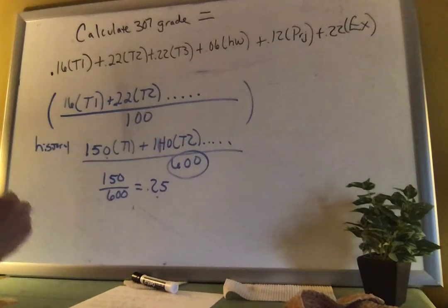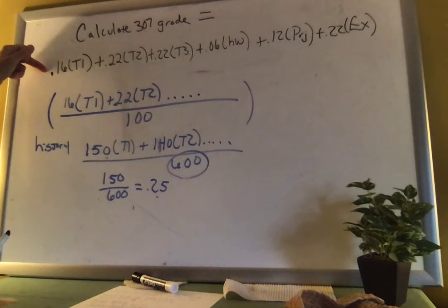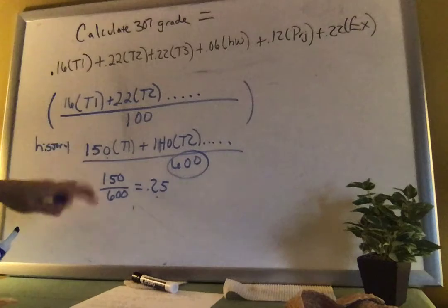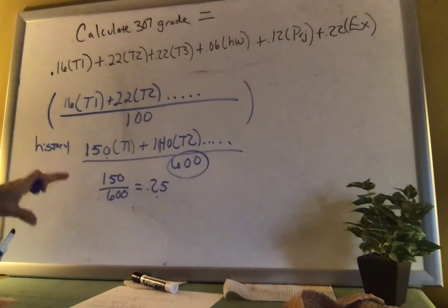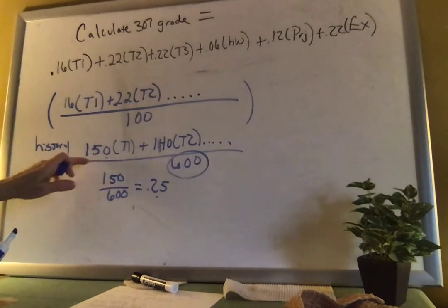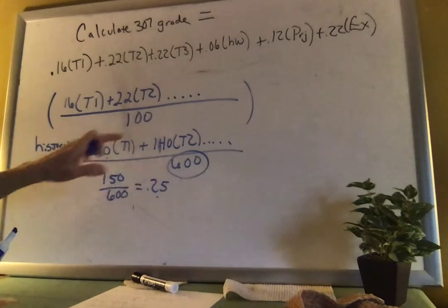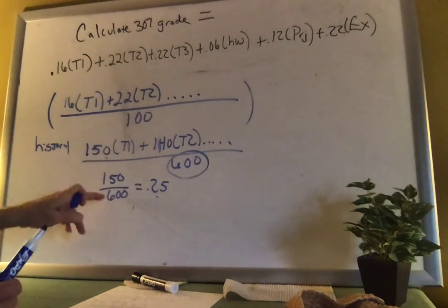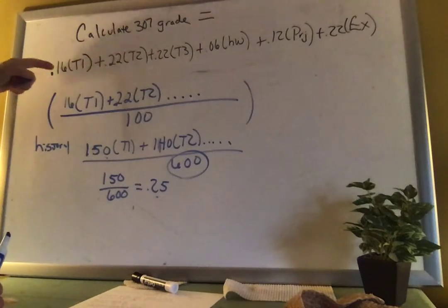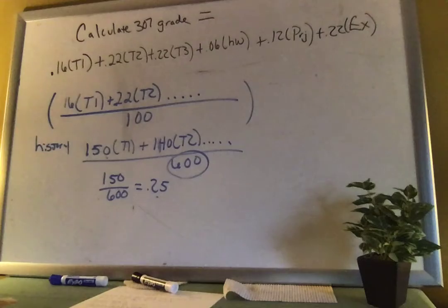So like if you have this history class and it's out of a total of 600 points, but test one is 150, you could turn all of that into percent, right? Your test one is 25%, and then it could look just like what I'm teaching you up here. So you have two ways to deal with those syllabi that are out of points. You set it up like this, or you go ahead and just turn each individual entry into a percent, and then you can use what I'm teaching you for 307.